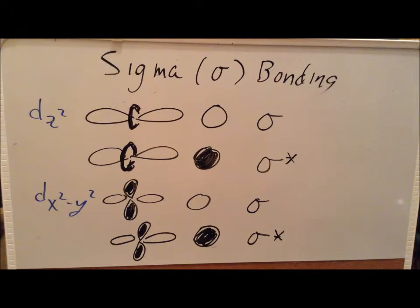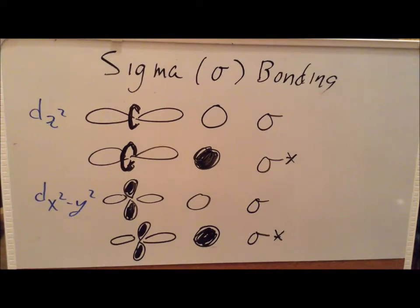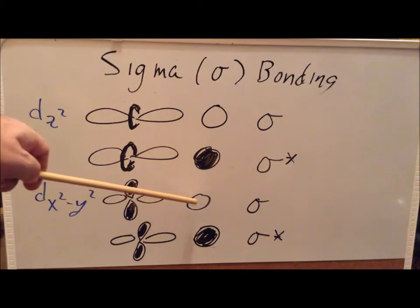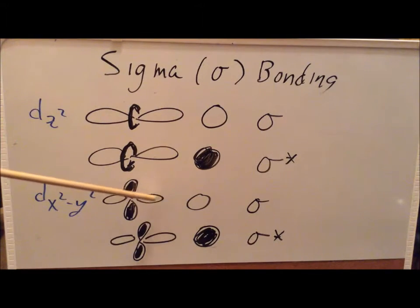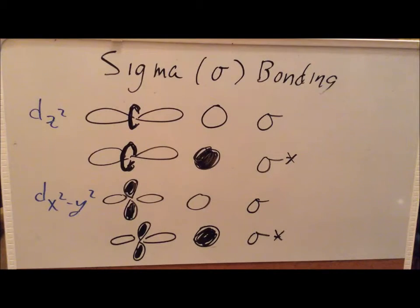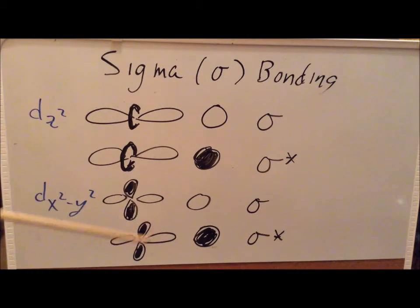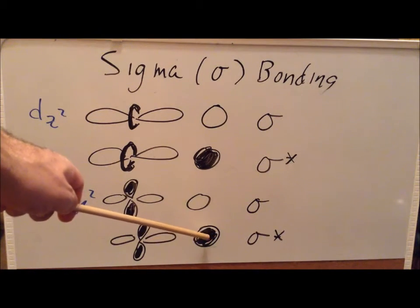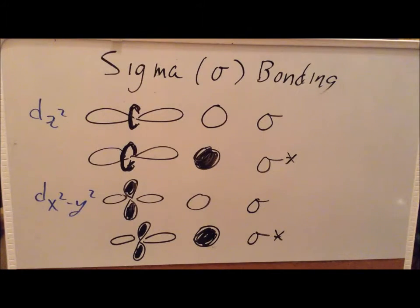Not only can we have this interaction with dz², we can also have it with dx²−y². When a lobe of the dx²−y² orbital overlaps with an s orbital of the same phase — both open — that gives us a sigma bonding orbital. If the dx²−y² lobe has positive phase but the s orbital has negative phase, that gives us a sigma antibonding orbital.